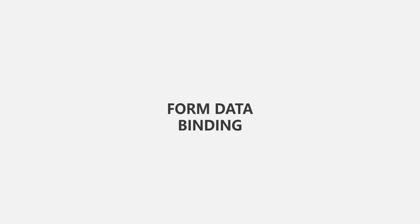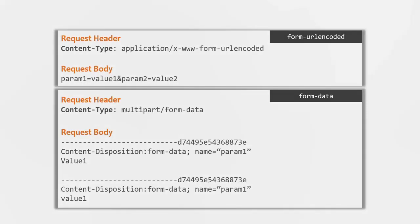The form values are added to the request body in two formats: either form-URL-encoded or as form-data. These are the two form formats in which the form data is sent to the server. In case of form-URL-encoded, the content type of the request header is application/x-www-form-urlencoded. But in case of form-data, it is multipart/form-data. Form-URL-encoded is the default one when using an HTML form and it is the simpler one.